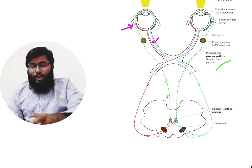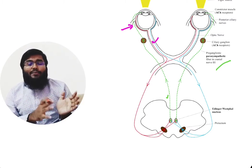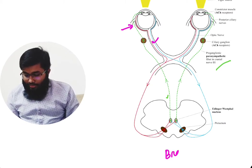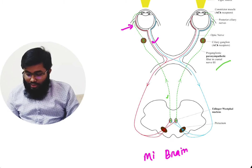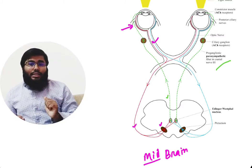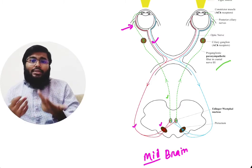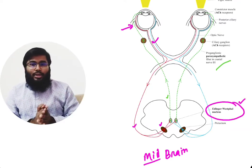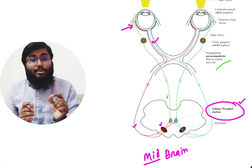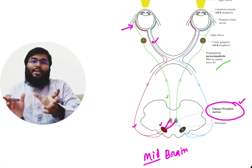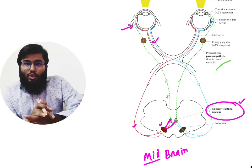The optic nerve gives off a branch at the level of the midbrain. At the level of the midbrain it gives off a branch to a nucleus known as the pretectal nucleus, and the pretectal nucleus innervates another nucleus called the Edinger-Westphal nucleus. The Edinger-Westphal nucleus is a parasympathetic nucleus, and the pretectum innervates both the same-side and the opposite-side Edinger-Westphal nucleus.